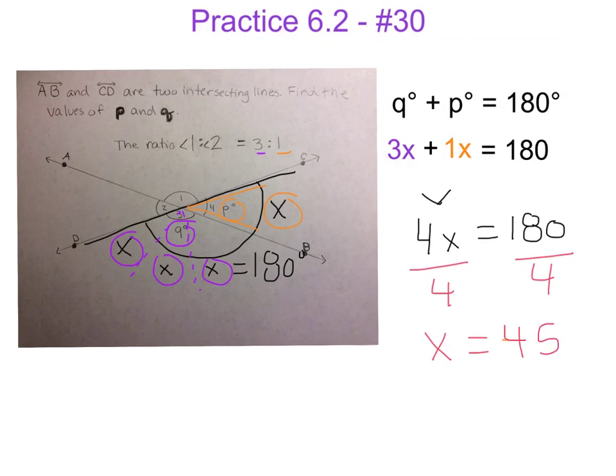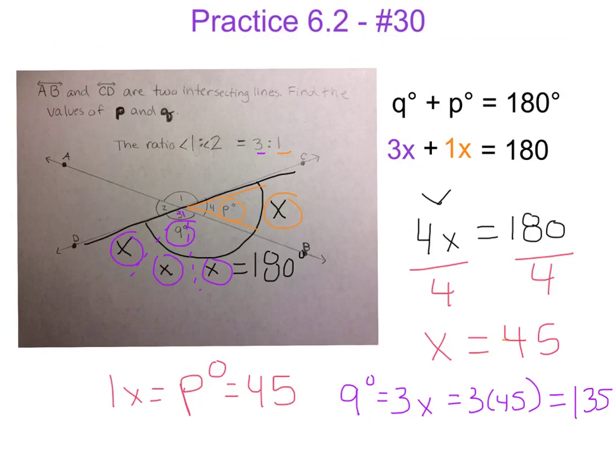So that means that measure of angle p is equal to 45 degrees, since that was just equal to 1x. And then we know that angle q, which was equal to 3x, or 3 times 45, happens to equal 135 degrees.